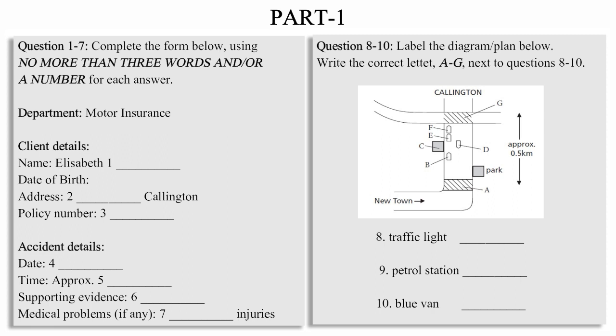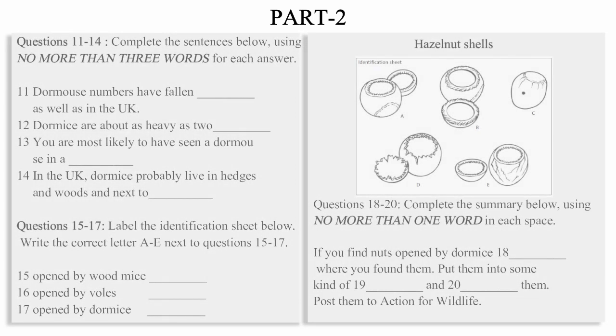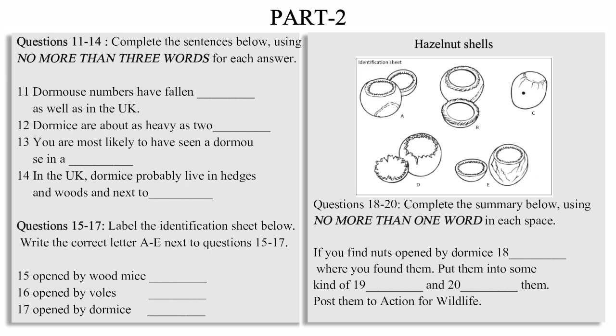Now turn to part two. You will hear a woman talking on the radio about a project to conserve dormice in one area of the UK. First, you have some time to look at questions 11 to 14. Now listen carefully and answer questions 11 to 14. Good morning and welcome to our weekly programme about countryside matters. With me today I have Jackie Lamerton. Jackie works for the nature organisation Action for Wildlife and she's appealing for volunteers for a project she's organising. So if you think you might be willing to help, please listen carefully. Jackie.